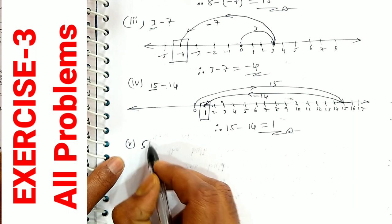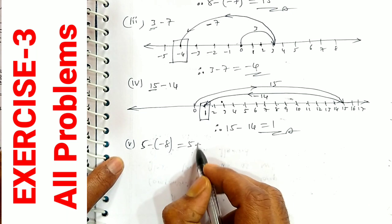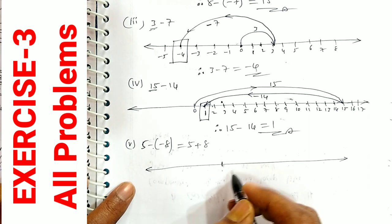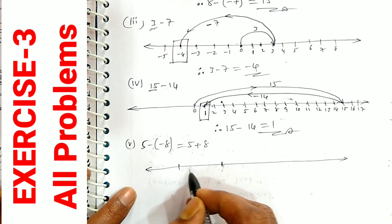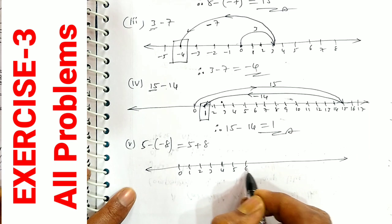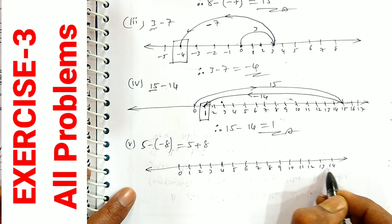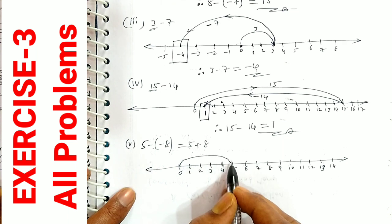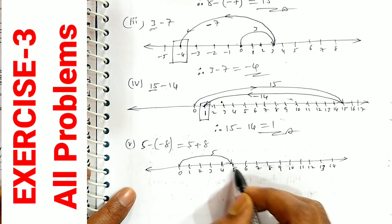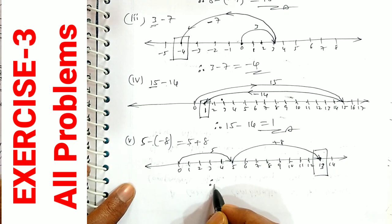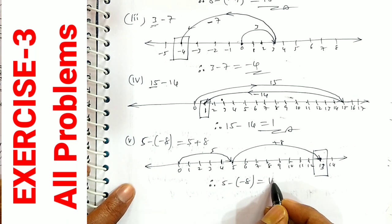Fifth question: 5 minus of minus 8. Since minus into minus equals plus, this becomes 5 plus 8. On the number line, we start at 5 and move 8 steps forward — 1, 2, 3, 4, 5, 6, 7, 8 — reaching 13. Therefore, 5 minus (-8) is equal to 13.